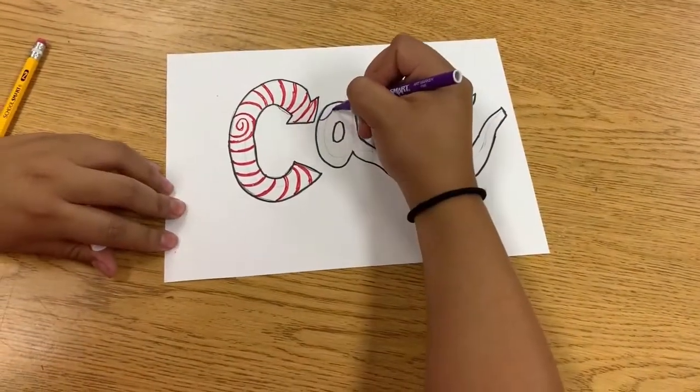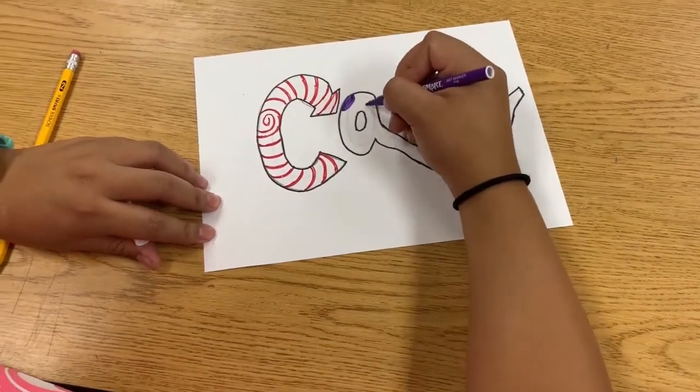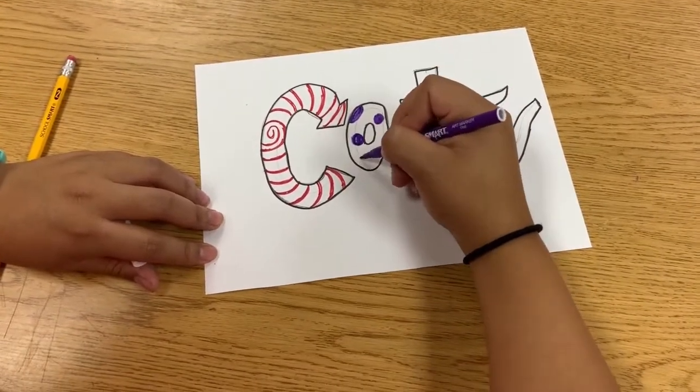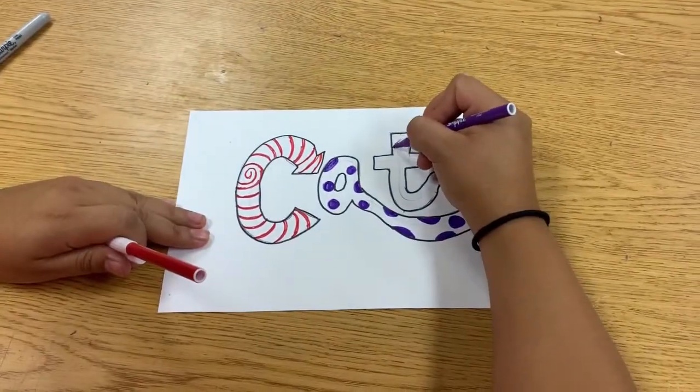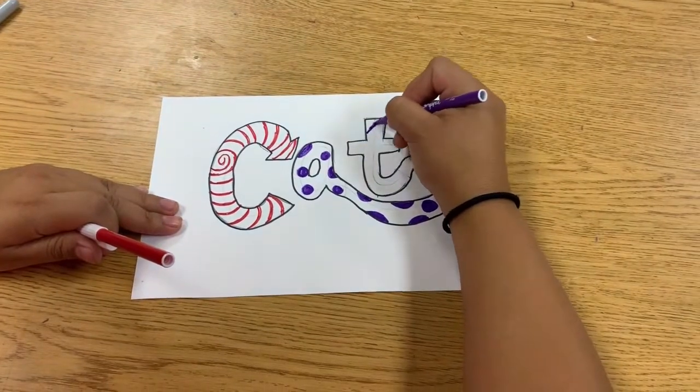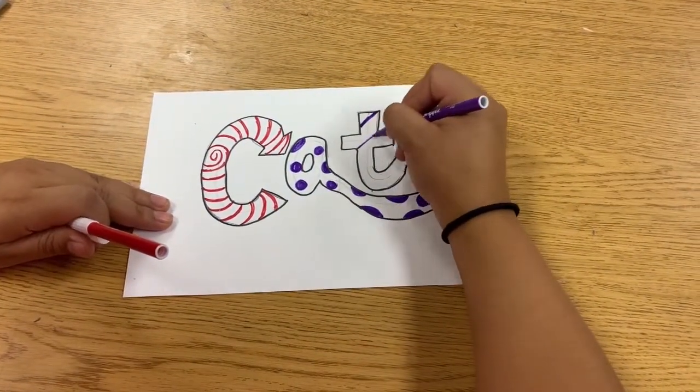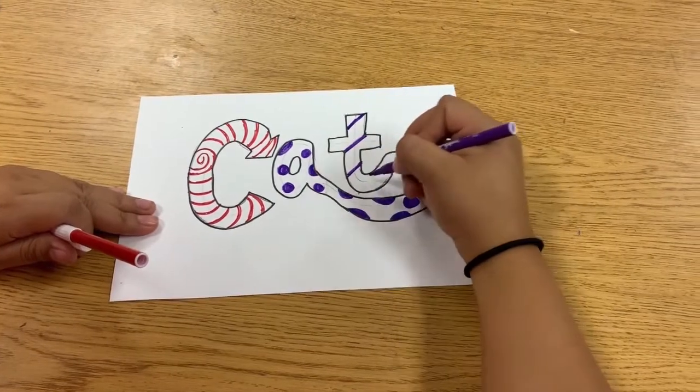Then I can do polka dots. Do some stripes, and I think I'm going to use both the red and the purple, just to kind of bring both colors together in the end.